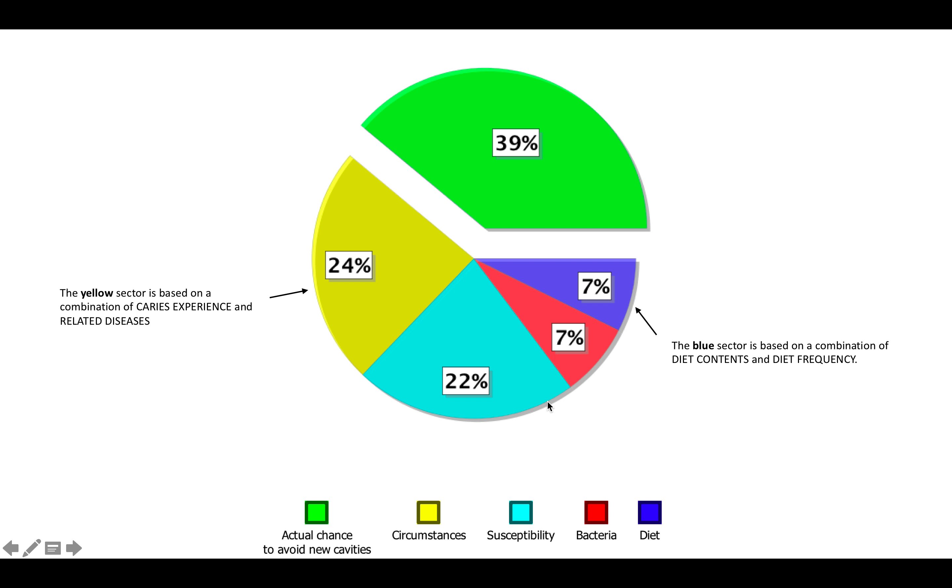Which was the saliva and plaque, for example, and also we collected plaque, which was bacteria. You've also in prac 1 done some preparatory work to prepare you to analyze the diet, which we'll complete in prac 3. You will also be looking at circumstances, and this sector is based on a combination of past and present caries experience and any related conditions or diseases which predispose someone to an increased risk of caries.